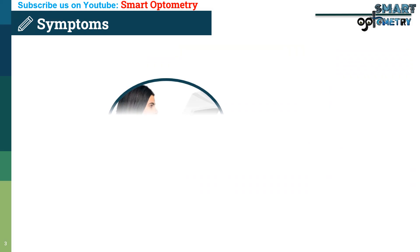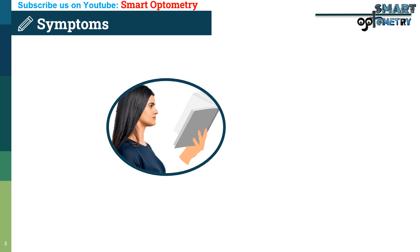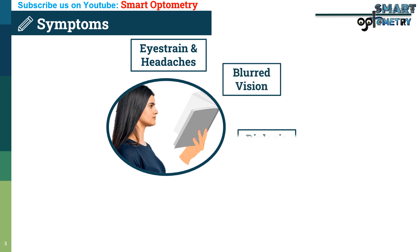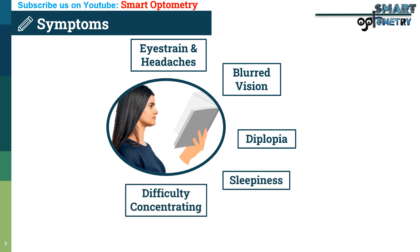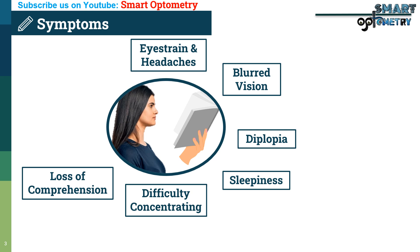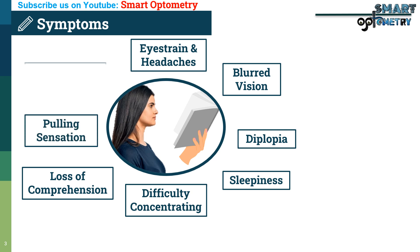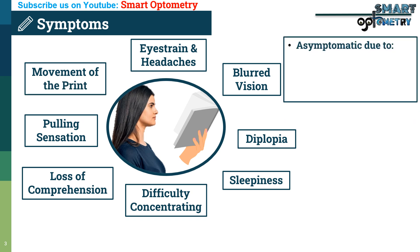Symptoms of convergence insufficiency — most symptoms are associated with reading or other close work. Common complaints include: eye strain and headaches after short periods of reading, blurred vision, diplopia, sleepiness, difficulty concentrating, and loss of comprehension over time.